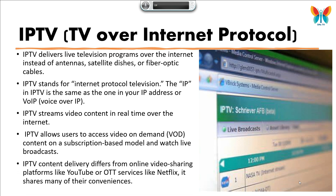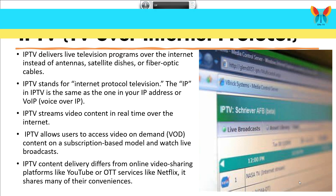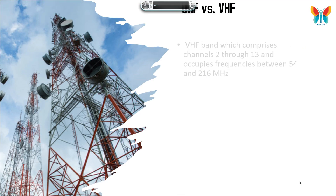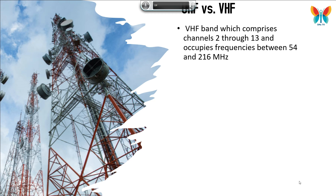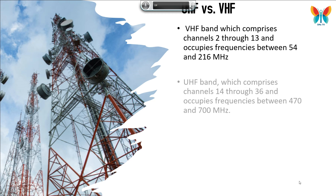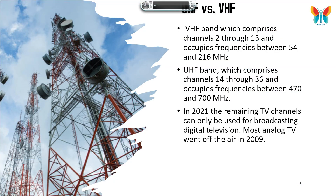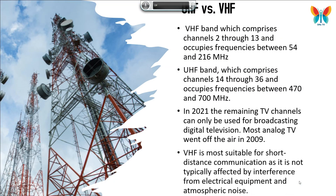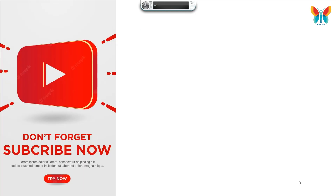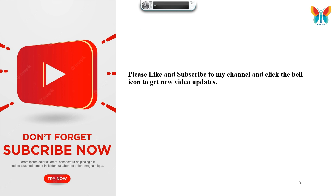UHF vs VHF. The VHF band comprises channels 2 through 13 and occupies frequencies between 54 and 216 MHz. The UHF band comprises channels 14 through 36 and occupies frequencies between 470 and 700 MHz. As of 2021, remaining TV channels can only be used for broadcasting digital television, and most analog TV went off the air in 2009. VHF is most suitable for short distance communication as it is not typically affected by interference from electrical equipment and atmospheric noise.